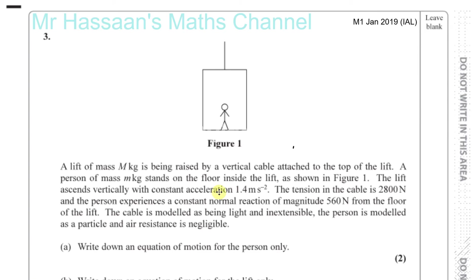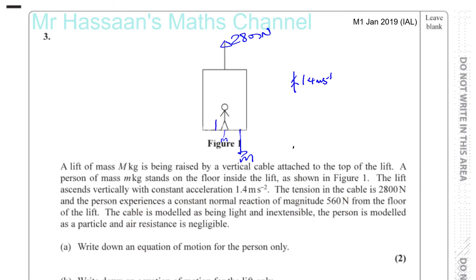A lift of mass M kilograms is being raised by a vertical cable attached to the top of the lift. A person of mass m kilograms stands on the floor inside the lift as shown in figure one. The lift ascends vertically with a constant acceleration of 1.4 meters per second squared. The tension in the cable is 2800 newtons. The person experiences a constant normal reaction of magnitude 560 newtons from the floor of the lift. The cable is modeled as light and extensible, the person as a particle, and air resistance is negligible.